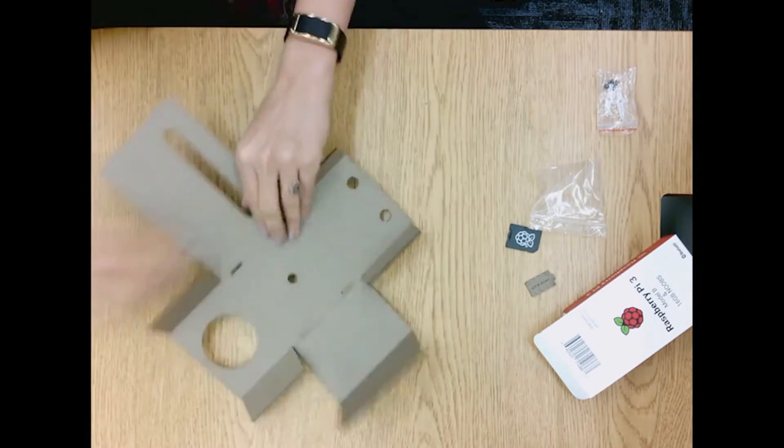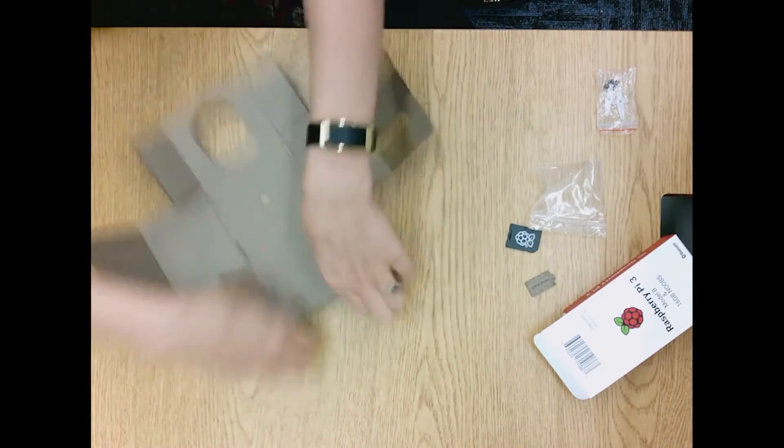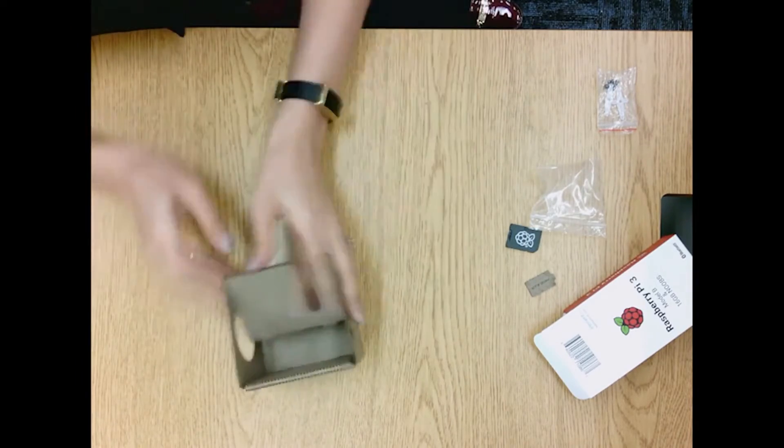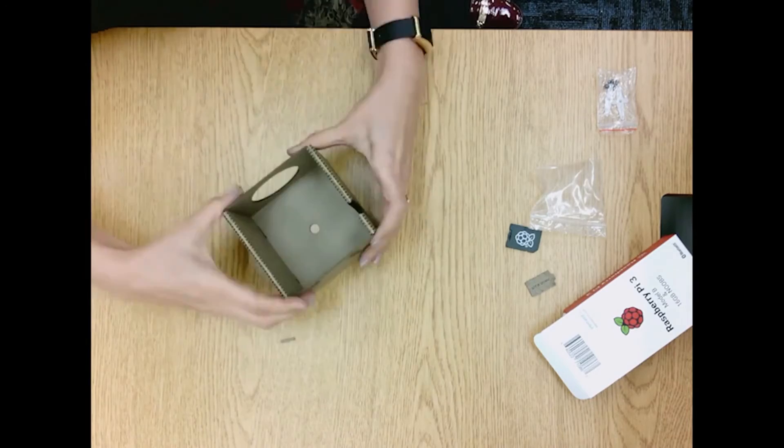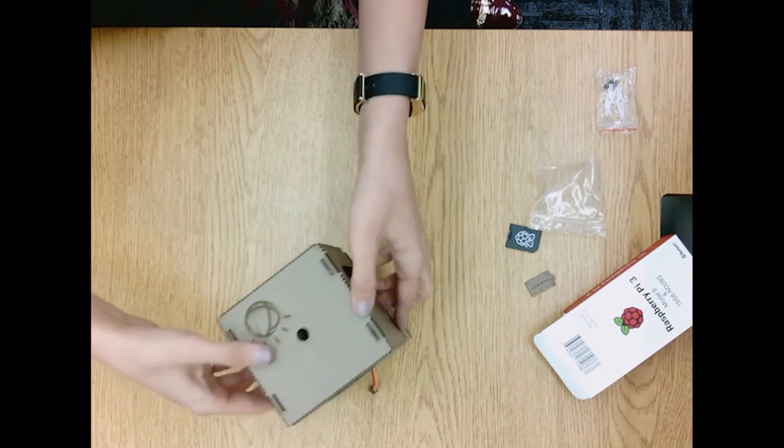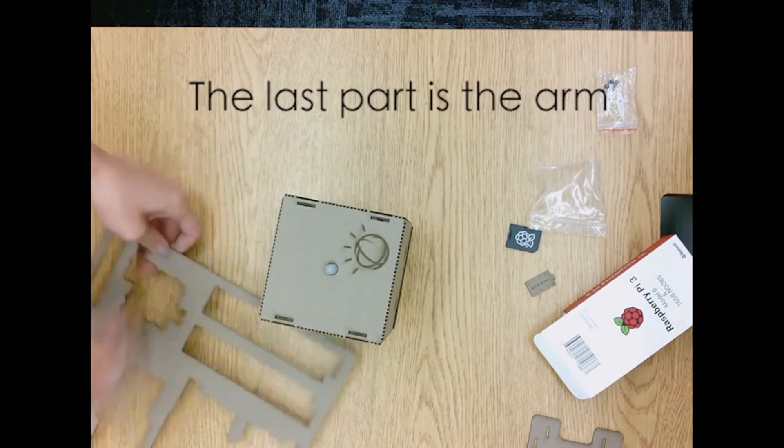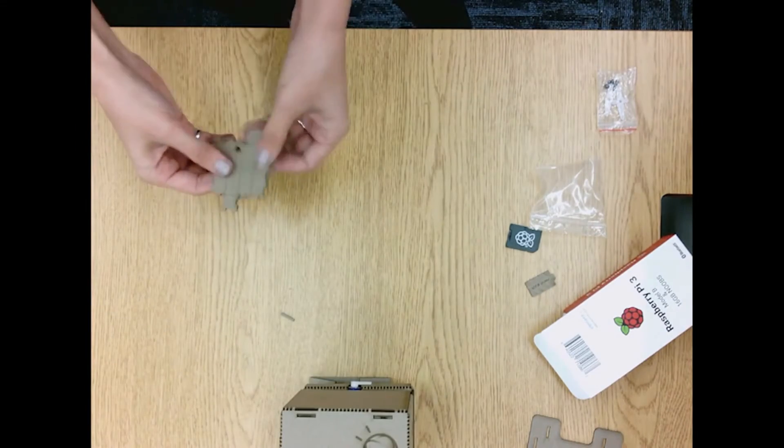TJ Bot is an example of embodied cognition, the idea of embedding artificial intelligence into objects in our everyday lives. While in this case IBM is putting Watson technologies into a cardboard cutout, imagine these types of capabilities in your walls, in your furniture, or in objects in your home.